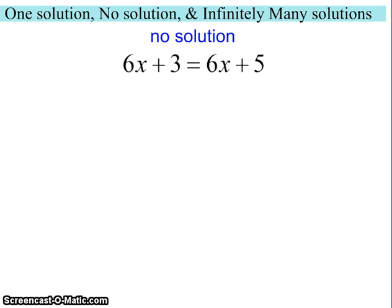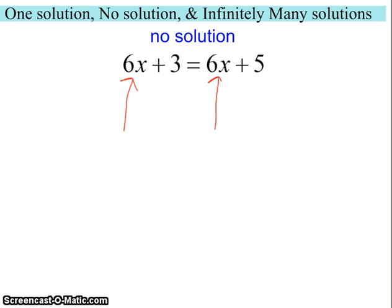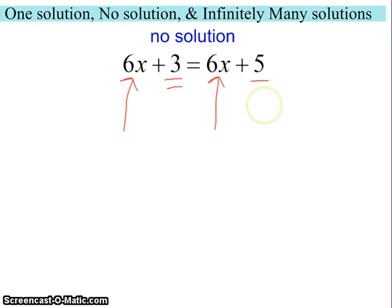Now let's look at a case of no solutions. Something I want to look at right away is we've got the same number of variables on both sides, but we have different constants. We have a 3 over here and we have a 5 on the other side. So let's see what happens in this case.